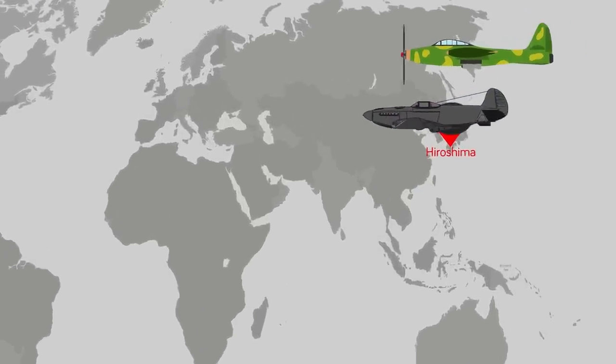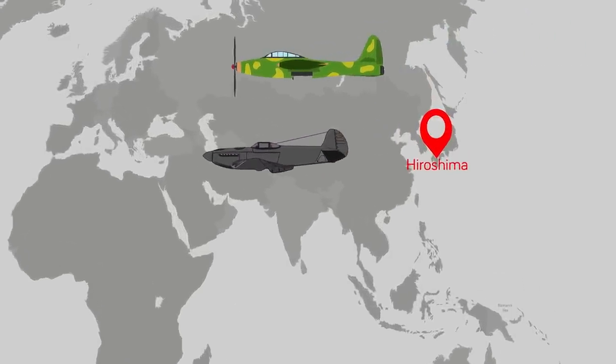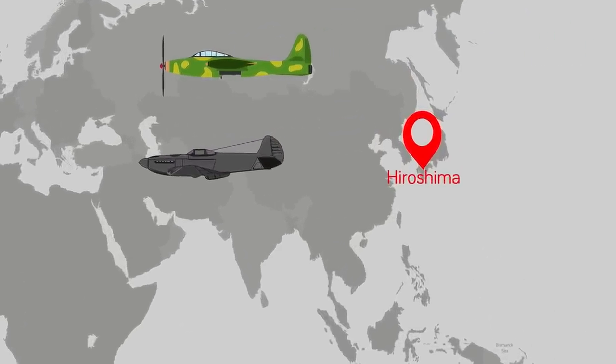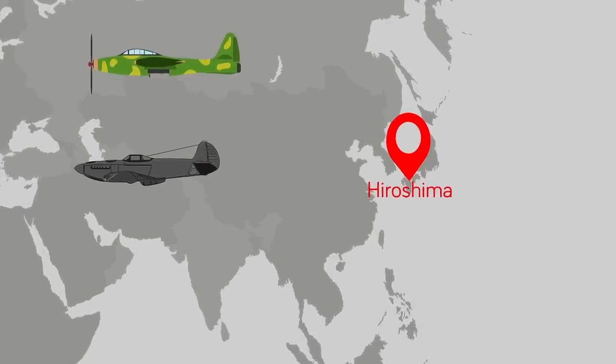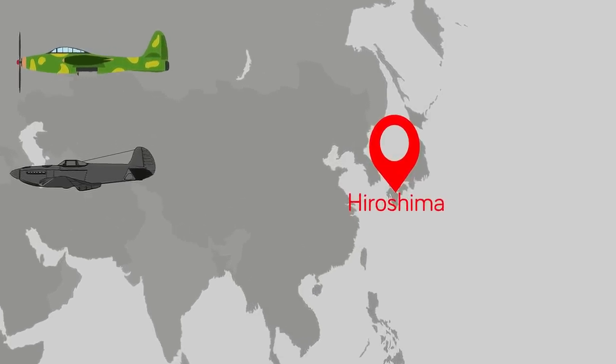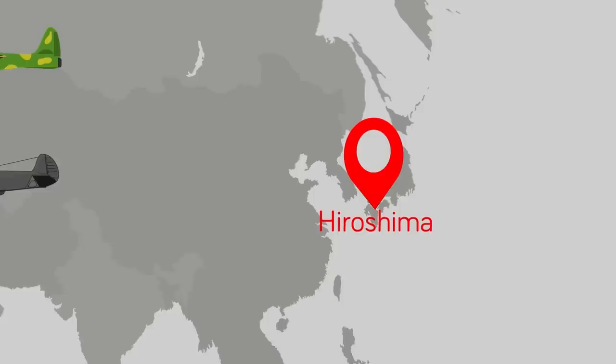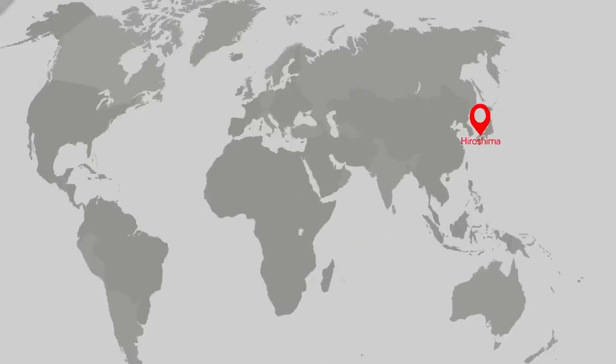38. A second plane escorted the Enola Gay and dropped a suite of instruments by parachute at the same time that the Little Boy atomic bomb was dropped. These instruments relayed via radio data to help engineers determine the total yield and effectiveness of the bomb.